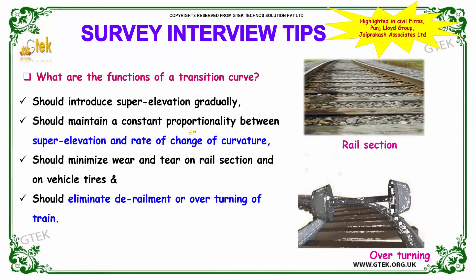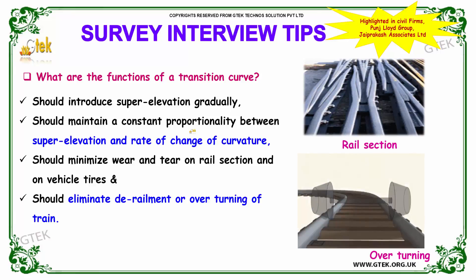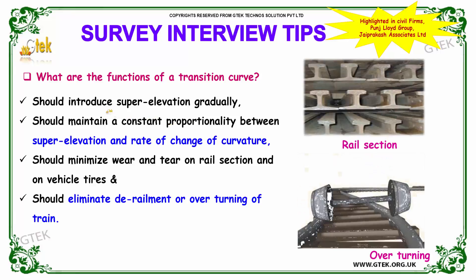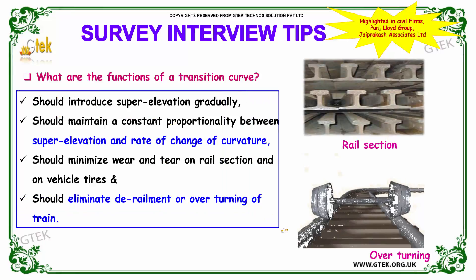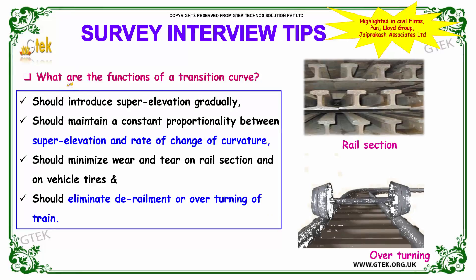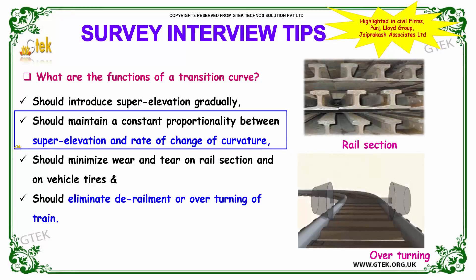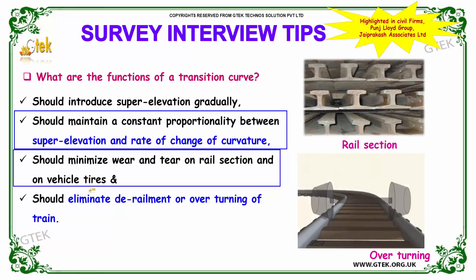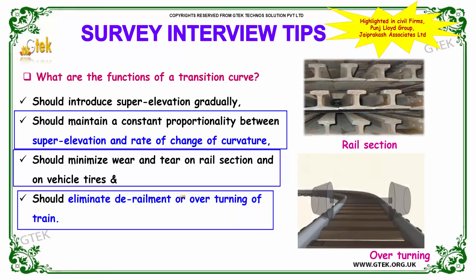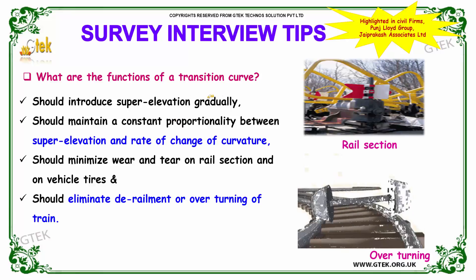Our next question is: what are the functions of a transition curve? The functions of a transition curve are: to introduce super elevation gradually; to maintain constant proportionality between super elevation and change of curvature; to minimize wear and tear on rail sections, wheels, and vehicle tires; and to eliminate derailment or overturning of the train.